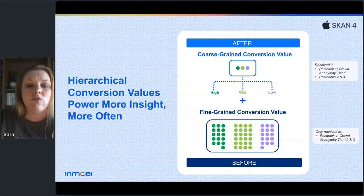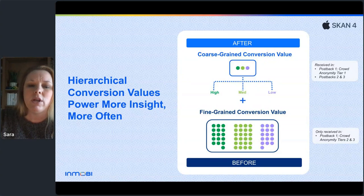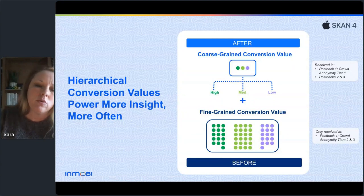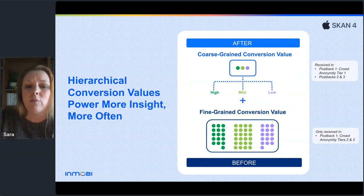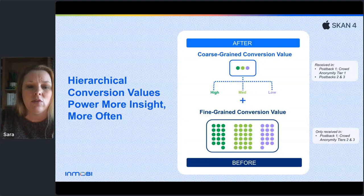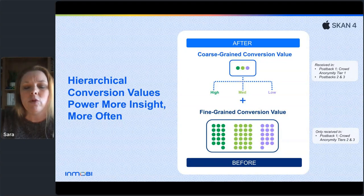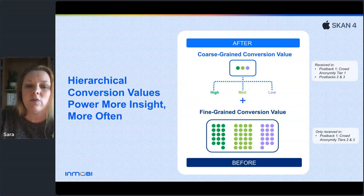Here's a look at the new conversion value schema. At the top is the new coarse-grain conversion value — high, medium, or low. This is called a hierarchical conversion value for a reason: the guidance is to take the fine-grain conversion values, which mirror the 63 values from earlier SKAN versions, and map each to a high, medium, or low bucket. That could be any combination of conversion activities or a sequence of events defining what a high, medium, or low value customer looks like for your specific app. The fine-grain conversion value is only eligible in the first postback; the second and third postbacks only receive the coarse-grain value.